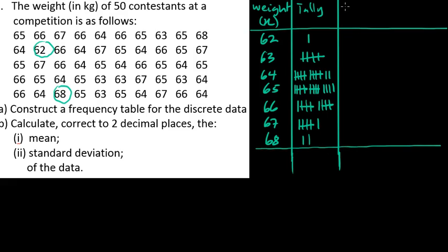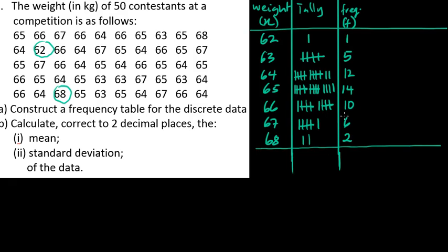The frequency column F shows: 1, 5, 12, 14, 10, 6, and 2. Adding these together, the sum of the frequencies equals 50.